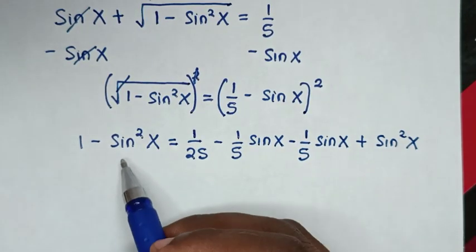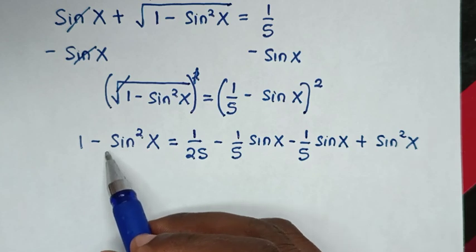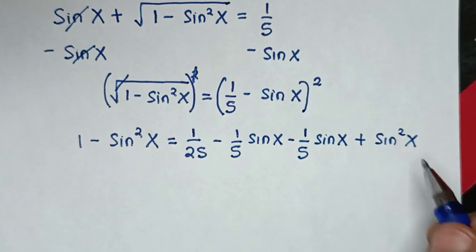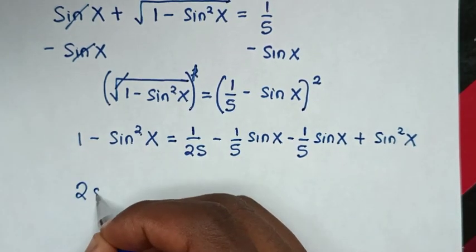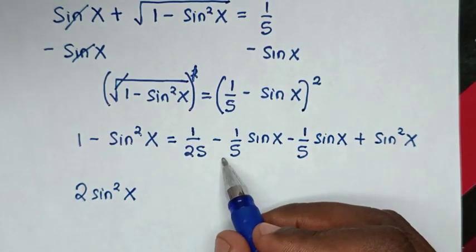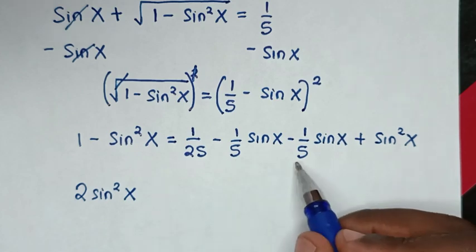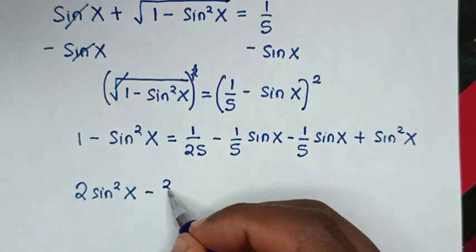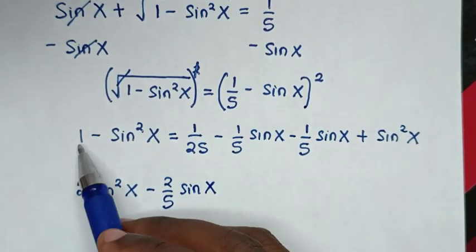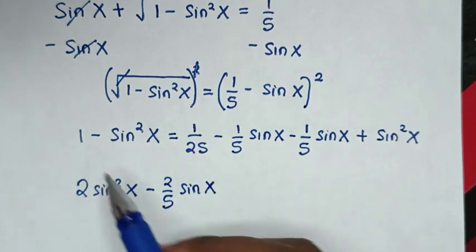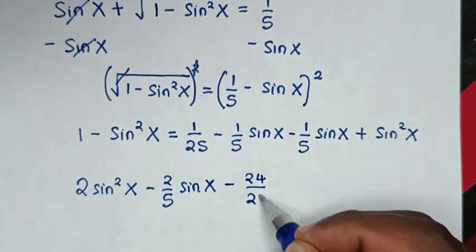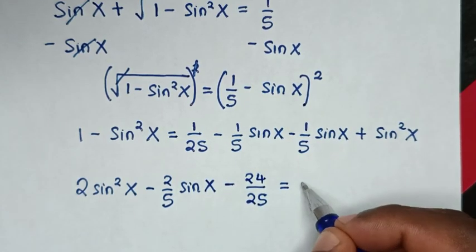Collecting like terms: sin squared x plus sin squared x gives 2 sin squared x. The two middle terms combine to negative 2 over 5 sin x. Taking the 1 minus sin squared x from the left side to the right gives 1 over 25 minus 1, which is negative 24 over 25. So the quadratic equation becomes: 2 sin squared x minus 2 over 5 sin x minus 24 over 25 equals 0.